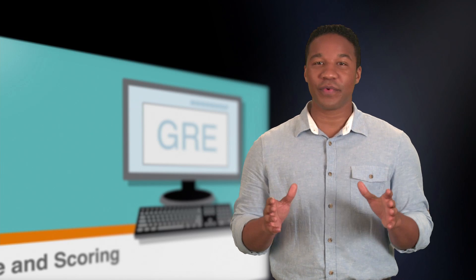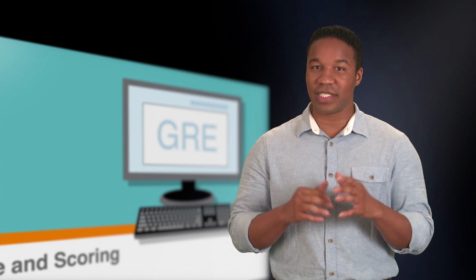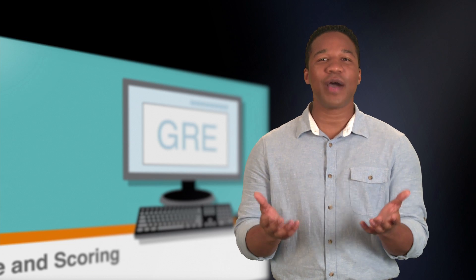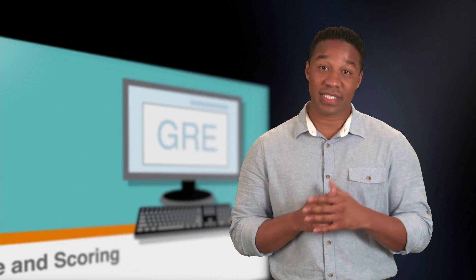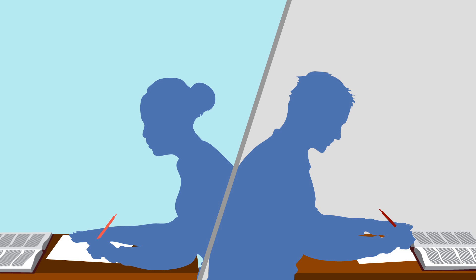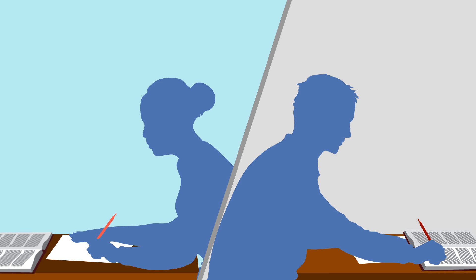Now on to the main reason you're taking the GRE — that grand score. One question everyone has is: how is the GRE scored? For the Writing section, two readers evaluate the Issue essay and two others grade the Argument essay. They're scored according to criteria set by the Educational Testing Service, the company that develops the GRE.